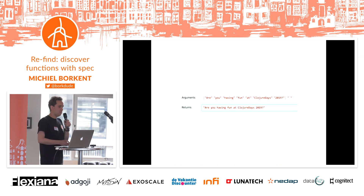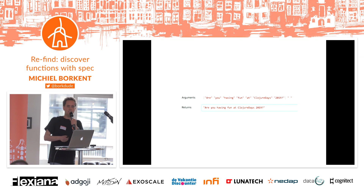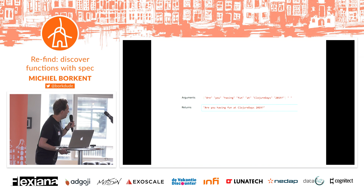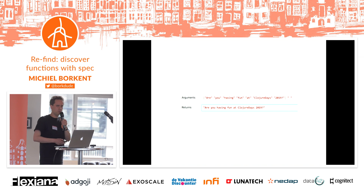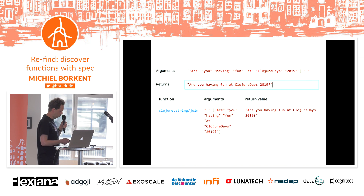For example, here we have some arguments: the list "Are you having fun at ClojureDays 2019?" and a string with only a space in it. We would like to get out of it one string with all the words separated by a space. I wonder what function will do that and the order of arguments. ReFind helps you find the correct function, so it suggests to you the function string.join.